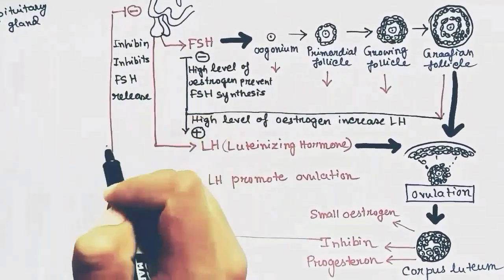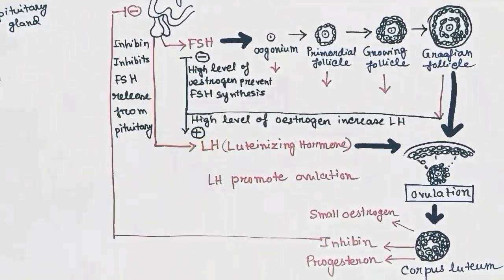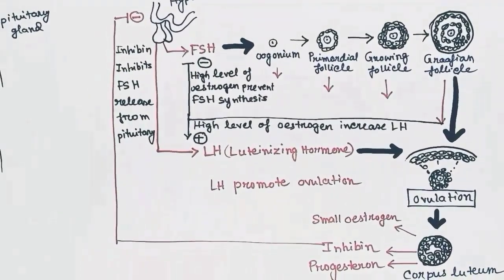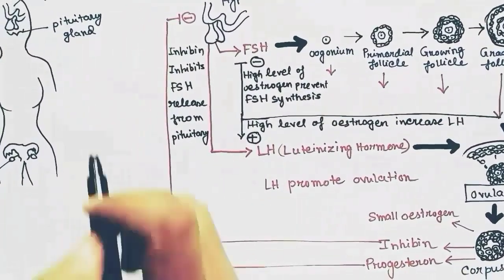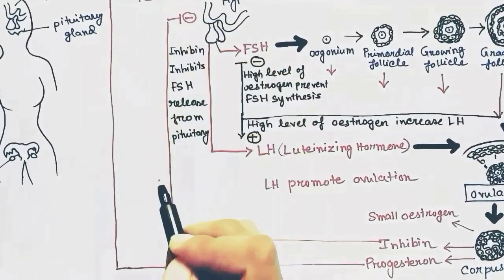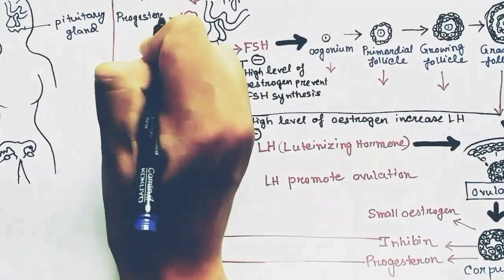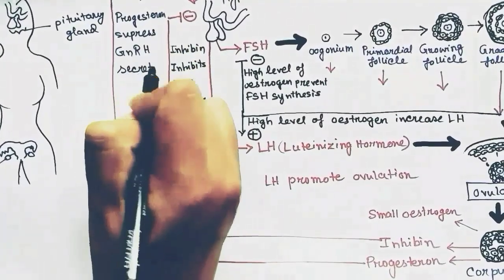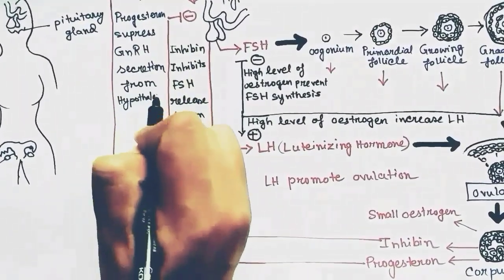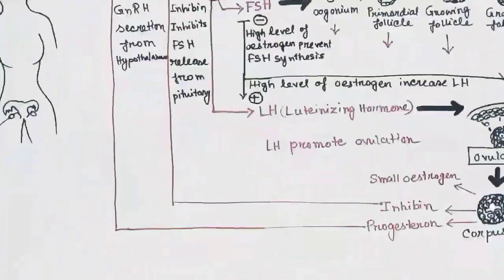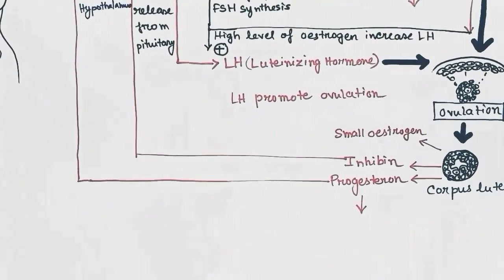Progesterone has its negative feedback on hypothalamus. Progesterone suppresses GnRH secretion from hypothalamus. As a result, stimulation for FSH and LH release is stopped and FSH and LH level goes down.